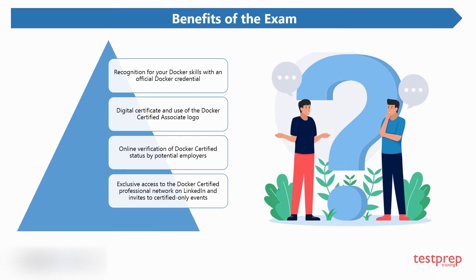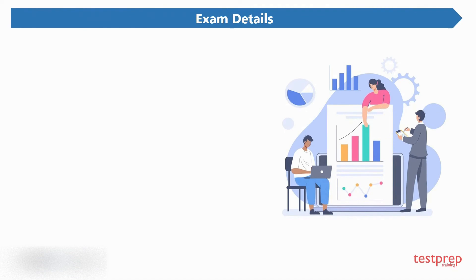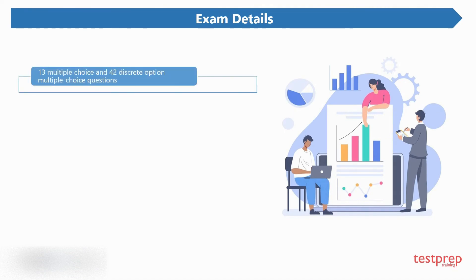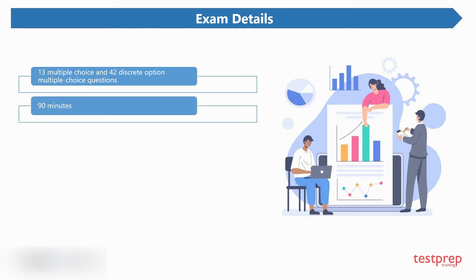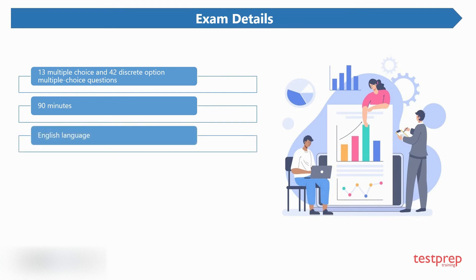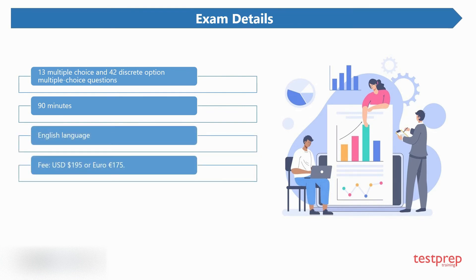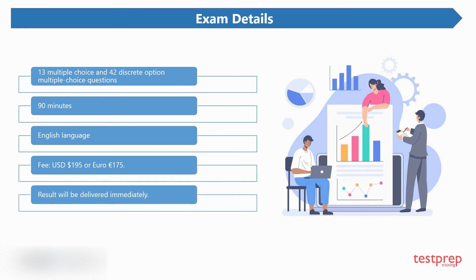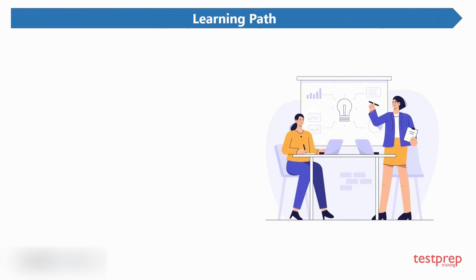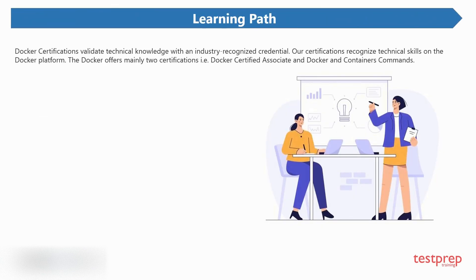Exam details: the Docker Certified Associate exam has 13 multiple choice and 42 discrete option multiple choice questions, which the candidate has to complete in 90 minutes. The exam is available in the English language. The fee for the Docker Certified Associate exam is $195 or €175. The result will be delivered immediately.